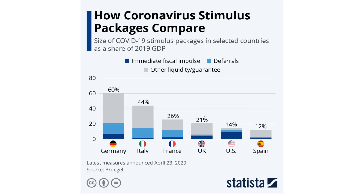The first method is the immediate impulse — basically the additional government spending such as medical resources, keeping people employed, subsidies, SMEs, public investments, and foregone revenues such as the cancellation of certain taxes and social security contributions. These measures immediately lead to deterioration of the budget balance without any potential direct compensation later. This is what a lot of people are talking about in the US, and what they're doing is a little bit scary because they've chosen to go down the route of using immediate impulse as their main tool.